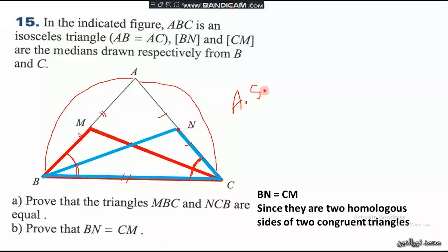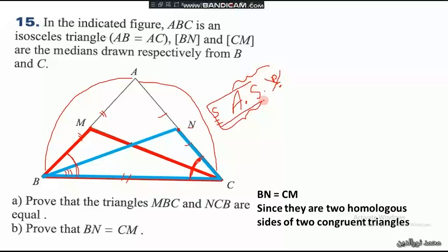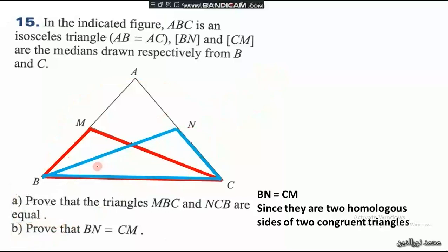We still need to prove one more side for side-angle-side, or one more angle for angle-side-angle. If we want to prove by angle-side-angle, we have this angle, this side, and a small angle — but we have no information about that angle. So let's try to prove by side-angle-side. Till now we have this angle, this angle, and the common side.